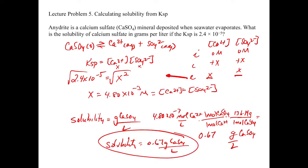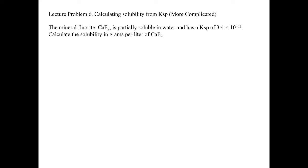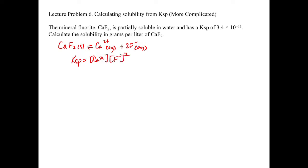In the next problem, we're going to look at a more complicated case where we have a non-one-to-one stoichiometry. In this second problem, what makes it more complicated is that the stoichiometry is now calcium 1, fluoride 2. So when we write out the equation, calcium fluoride solid goes back and forth with calcium 2+ aqueous plus 2F⁻ aqueous. Our KSP equals the concentration of calcium 2+ times the concentration of F⁻ squared, because of the stoichiometric coefficient of 2.